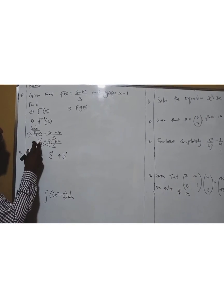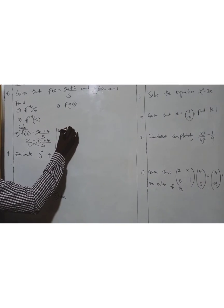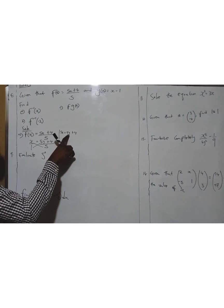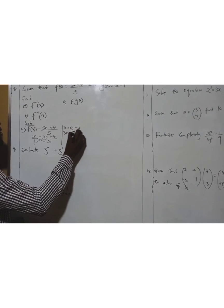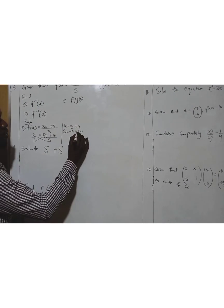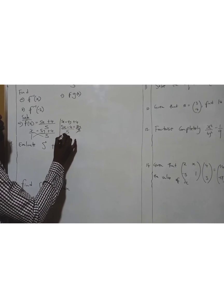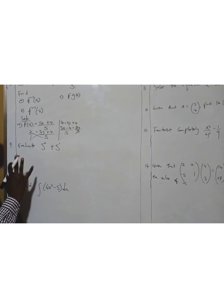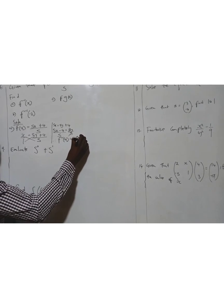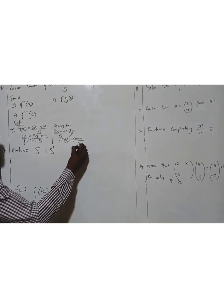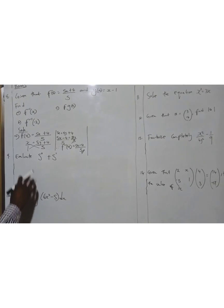Once you have this, you make y the subject. So here you cross multiply: 5x equals 5y plus 4. I need my y to be by itself. So this positive four goes this side, becomes 5x minus 4 equals 5y. Divide by 5. Therefore, once the y is by itself, then you have found your inverse: 5x minus 4 over 5.